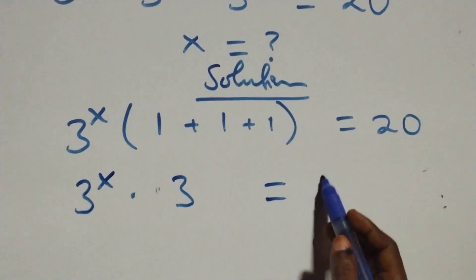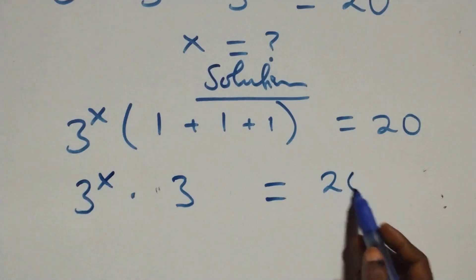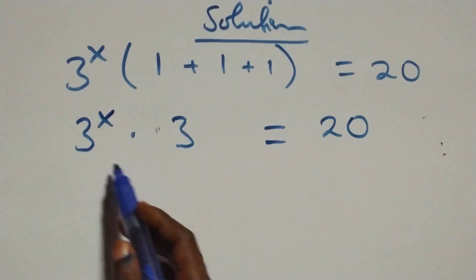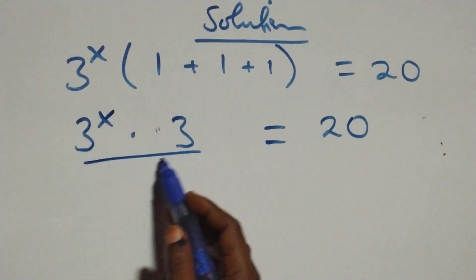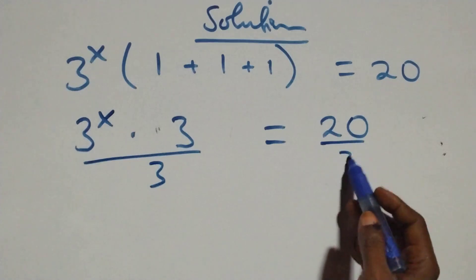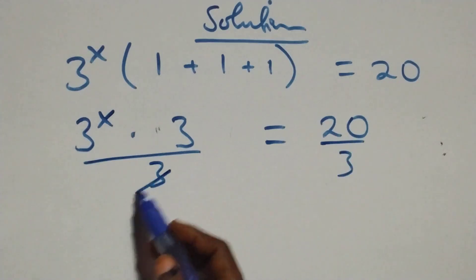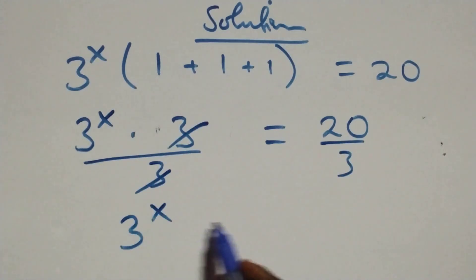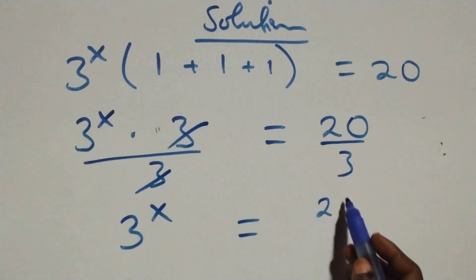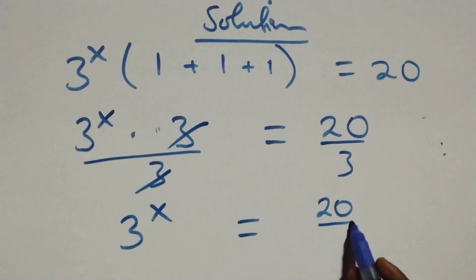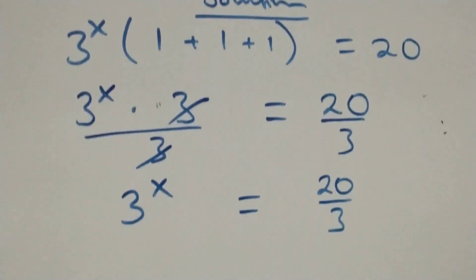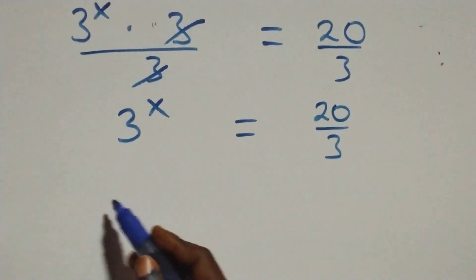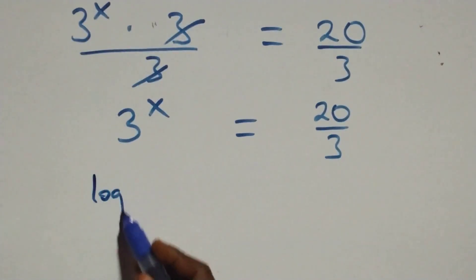Equals to 20. From here we divide both sides by 3 — divide this side by 3 also. 3 cancels each other, and we have 3 raised to power x equals to 20 over 3. Then the next step, we take the log on both sides.